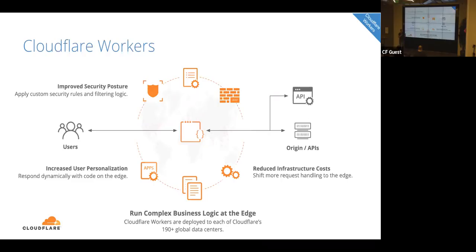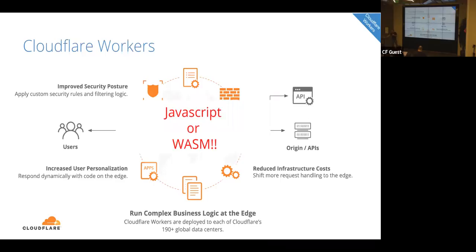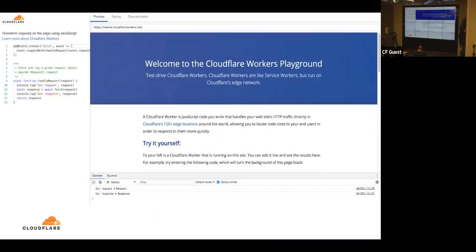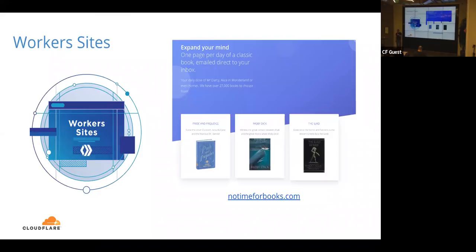So if you want to write an API in Rust that runs on the edge, you can do that today. There are lots of things Workers are used for — security, running complex business logic — but something that gets missed is that Workers also has a KV: a key-value store, basically an eventually consistent key-value store. If your app can work without a transactional database, you can run the whole thing on the edge. Not all apps work like that; sometimes you still need origin with transactional guarantees. But I just want to open folks' minds that that's actually possible today.